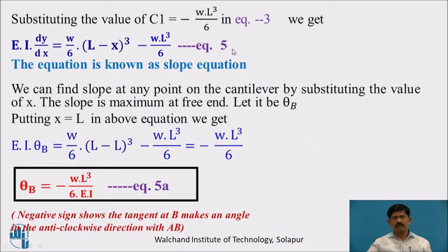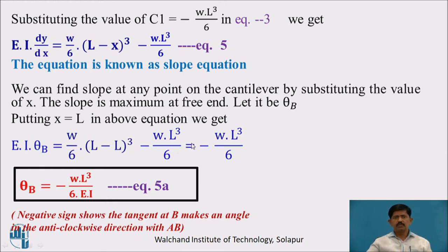Substituting C₁ = −WL³/6 into equation 3, we get EI·dy/dx = (W/6)(L − x)³ − WL³/6 (equation 5), known as the slope equation. From this equation we can find the slope at any point by substituting the value of x. The slope is maximum at the free end; putting x = L gives EI·θ_B = (W/6)(0)³ − WL³/6 = −WL³/6, therefore θ_B = −WL³/6EI (equation 5A). The negative sign shows the angle is in the anti-clockwise direction.